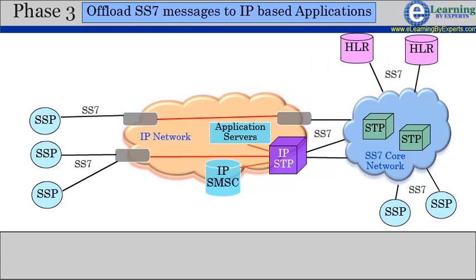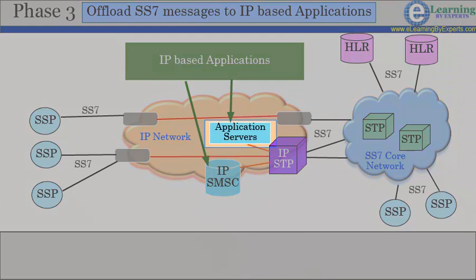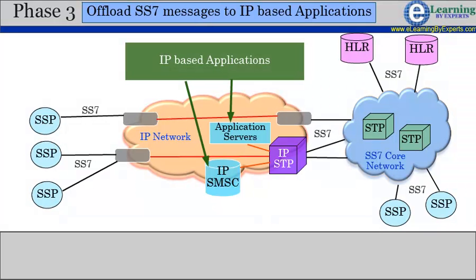Phase 3 of SIGTRAN involves introducing IP-based applications to handle SS7 messages and to interact with IP-based STPs. Examples of such applications are application servers to handle call and subscription-related messages, and SMSCs for handling text-based messages. Such IP-based applications ensure direct communication and remove the requirement of gateways to perform protocol conversions.